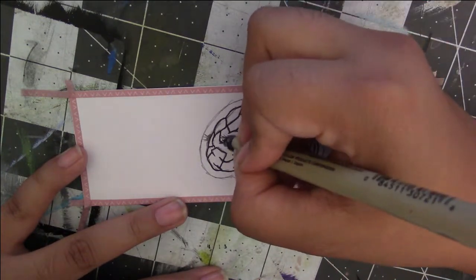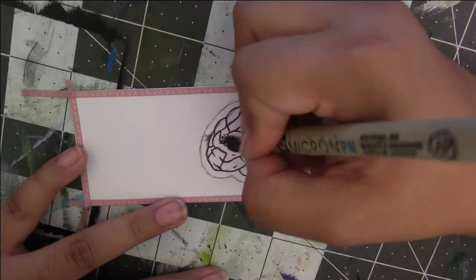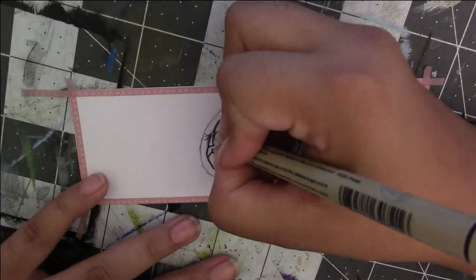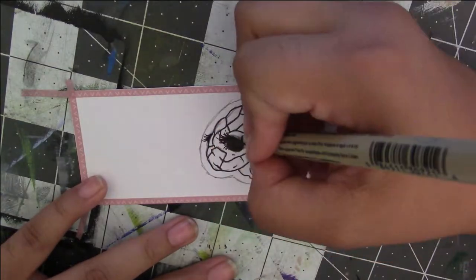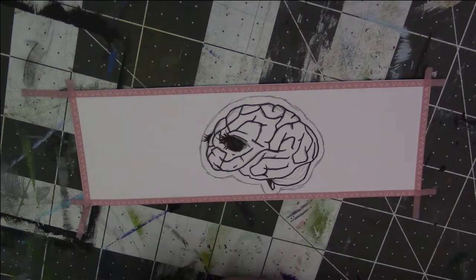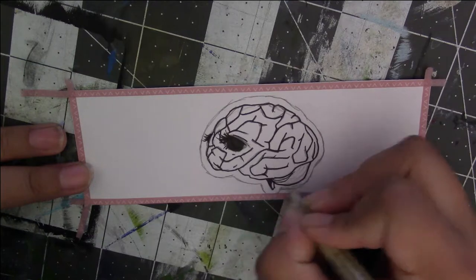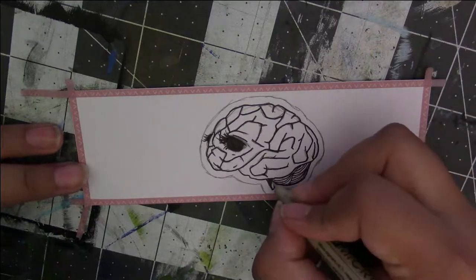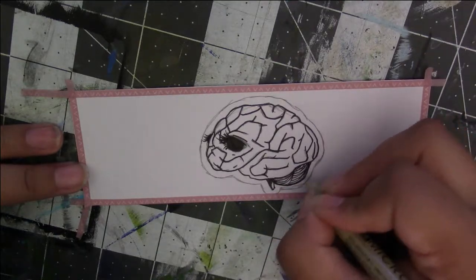And then I kind of wanted to draw eyes on the brain for some very odd reason. And so I drew them hollowed out. So the brain is mindless, which I thought was kind of funny because it's a brain. So I was hoping that maybe as I was drawing this, it would all come together.